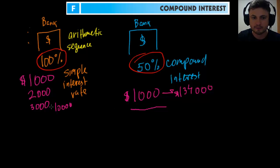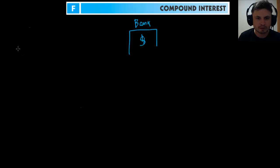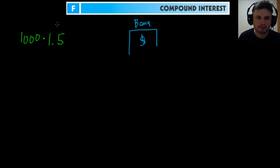So how does compound interest work? From our last video, this is what we call a geometric sequence. We start by investing a thousand dollars at 50% interest. After one year you multiply by 1.5 — because 150% equals 1.5 — giving you $1,500 at year one.